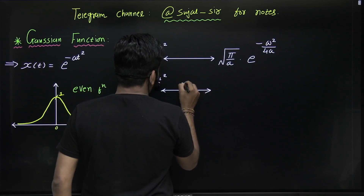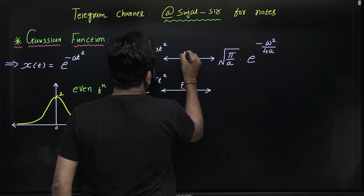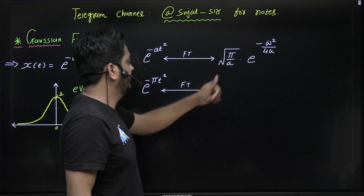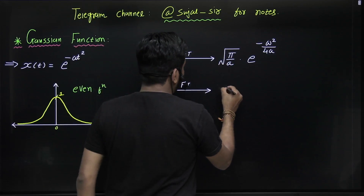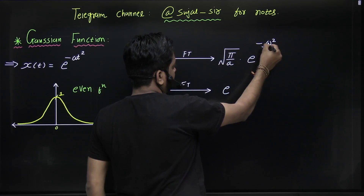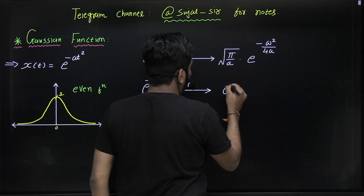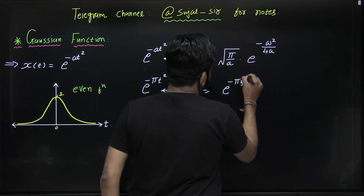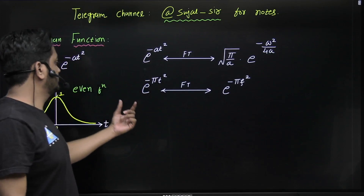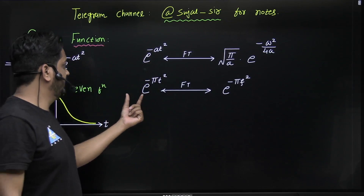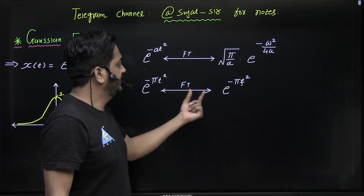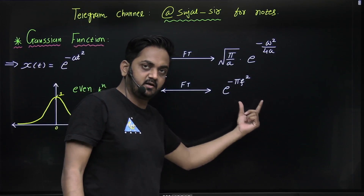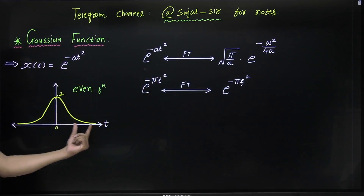Substituting a = π and setting ω = 2πf, you finally get e^(-πf²). So the Fourier transform of e^(-πt²) is e^(-πf²) — the same form. Graphically it also looks like a Gaussian, with f on the x-axis.